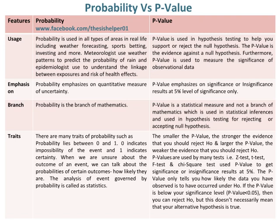There are many traits of probability: probability lies between 0 and 1, where 0 indicates impossibility of the event and 1 indicates certainty. When we are unsure about the outcome of an event, we can talk about the probabilities of certain outcomes — how likely they are. The analysis of events governed by probability is called statistics.